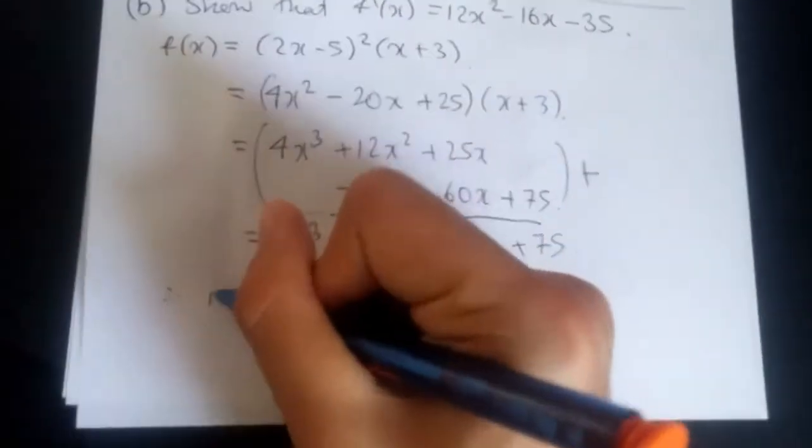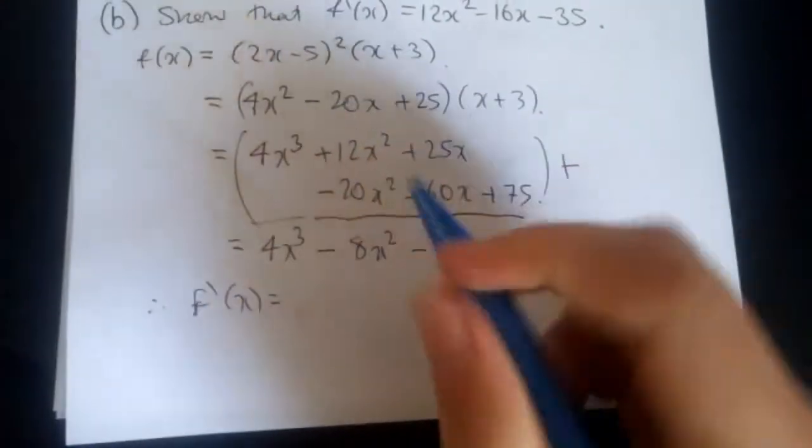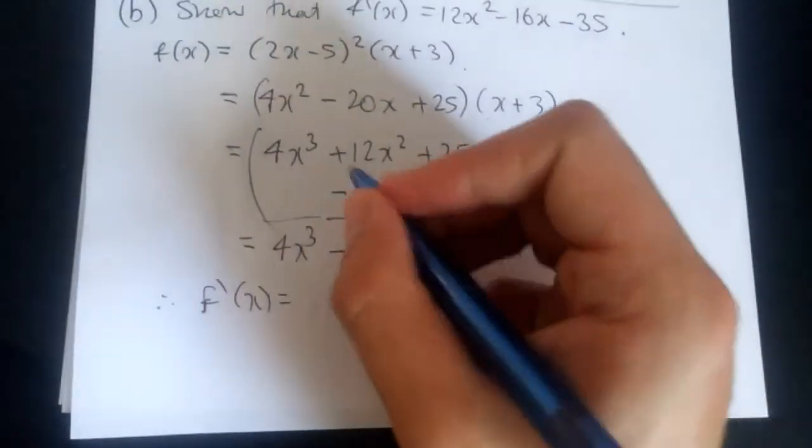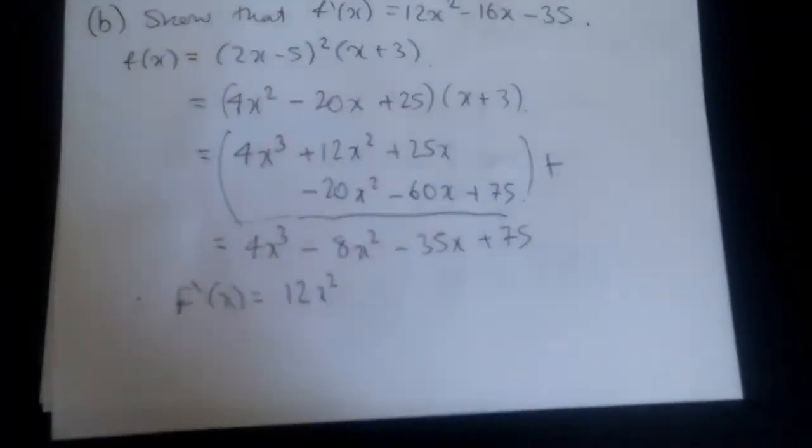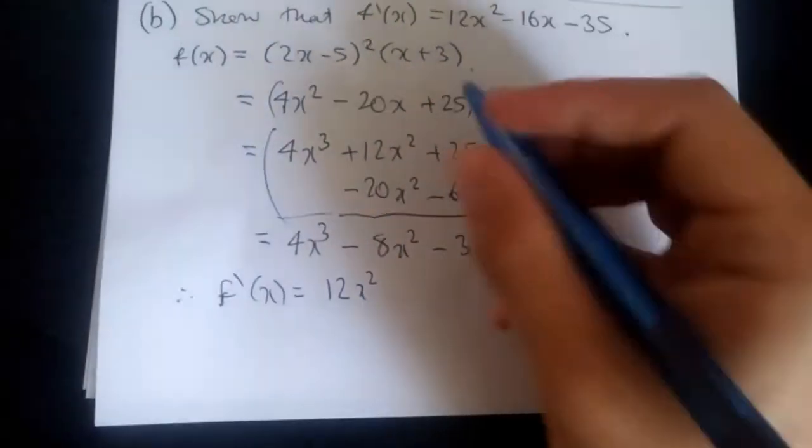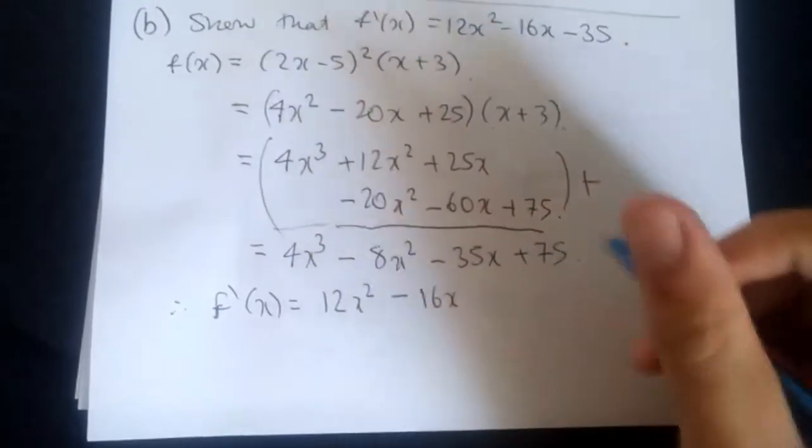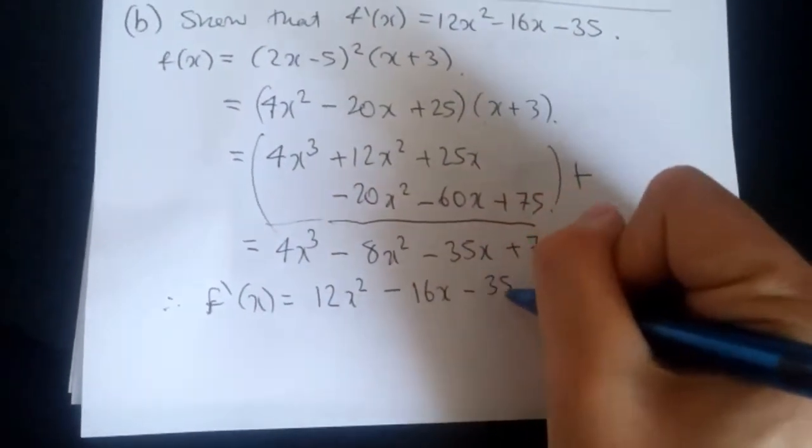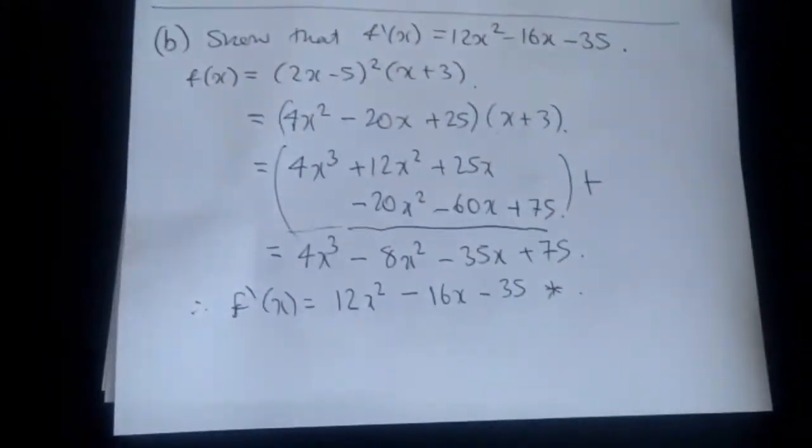So therefore, the first derivative equals... In other words, to differentiate this, drop the powers down. So drop the power 3. Now, 4 times 3 is 12x². Then drop the power 2, and 8 times 2 is 16x. And of course, differentiate -35x. Plus 75 disappears, and voila. Here is the answer to part B.